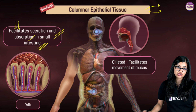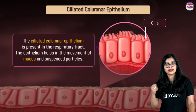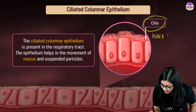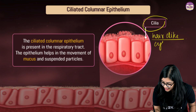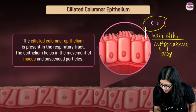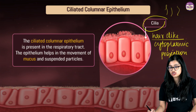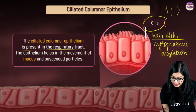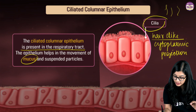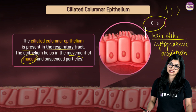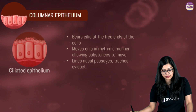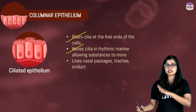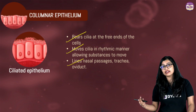One modified version of columnar epithelium is ciliated columnar epithelium. These cells have specialized hair-like cytoplasmic projections called cilia that can lash back and forth in a rhythmic movement. They are found in the inner linings of the respiratory tract — including the trachea and oviduct — where the lashing movement of cilia helps remove suspended particles and mucus.